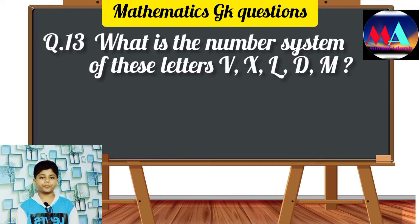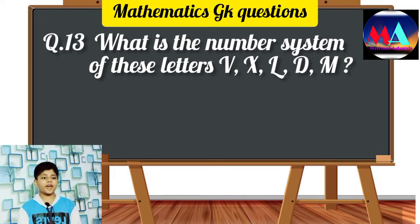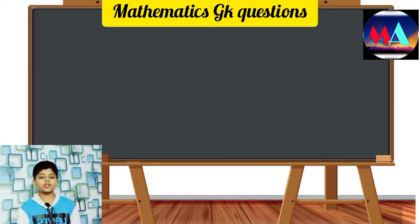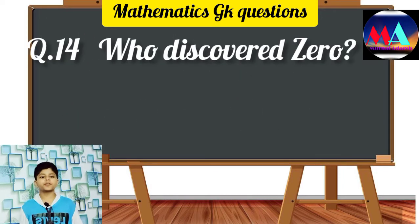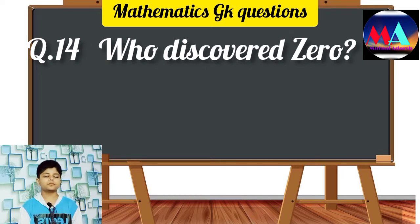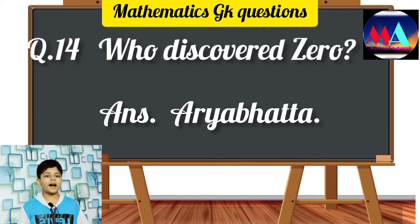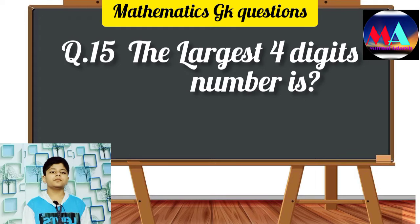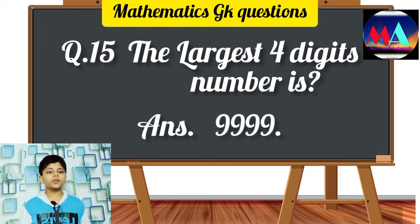Question number 13: What is the number system of the letters V, X, L, D, and M? Question number 14: Who discovered zero? Answer: Aryabhatta. Question number 15: What is the largest four-digit number? Answer: 9999.